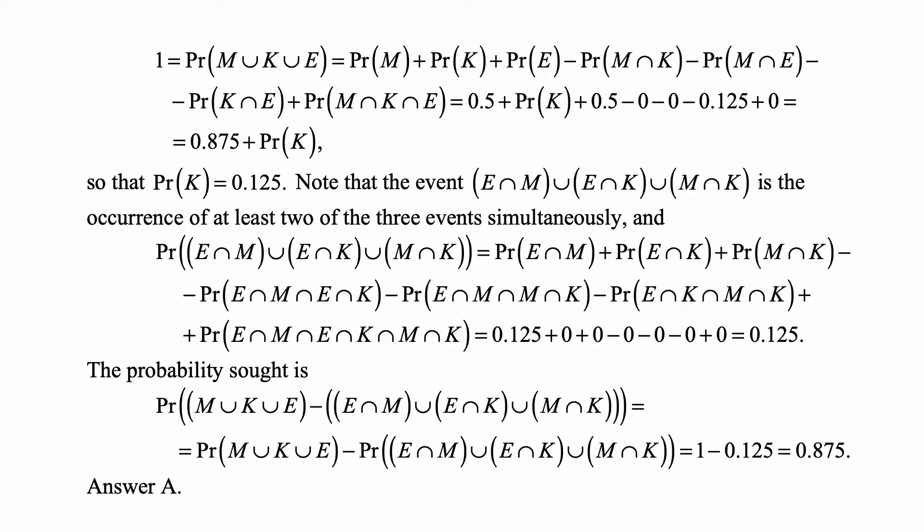Now, using inclusion-exclusion: P(M ∪ K ∪ E) = 1 = P(M) + P(K) + P(E) − P(M ∩ K) − P(M ∩ E) − P(K ∩ E) + P(M ∩ K ∩ E). That equals 0.5 + P(K) + 0.5 − 0 − 0.125 − 0 + 0 = 0.875 + P(K), so P(K) = 0.125.